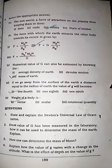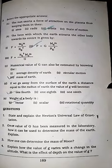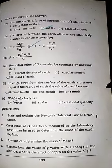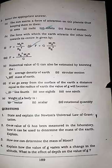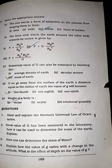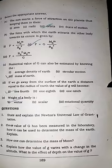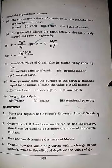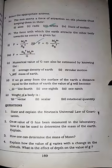Now MCQ number C: The numerical value of G can also be estimated by knowing... The numerical value of G, the gravitational constant, can be estimated if we know the mass of Earth. That's why we can estimate it.